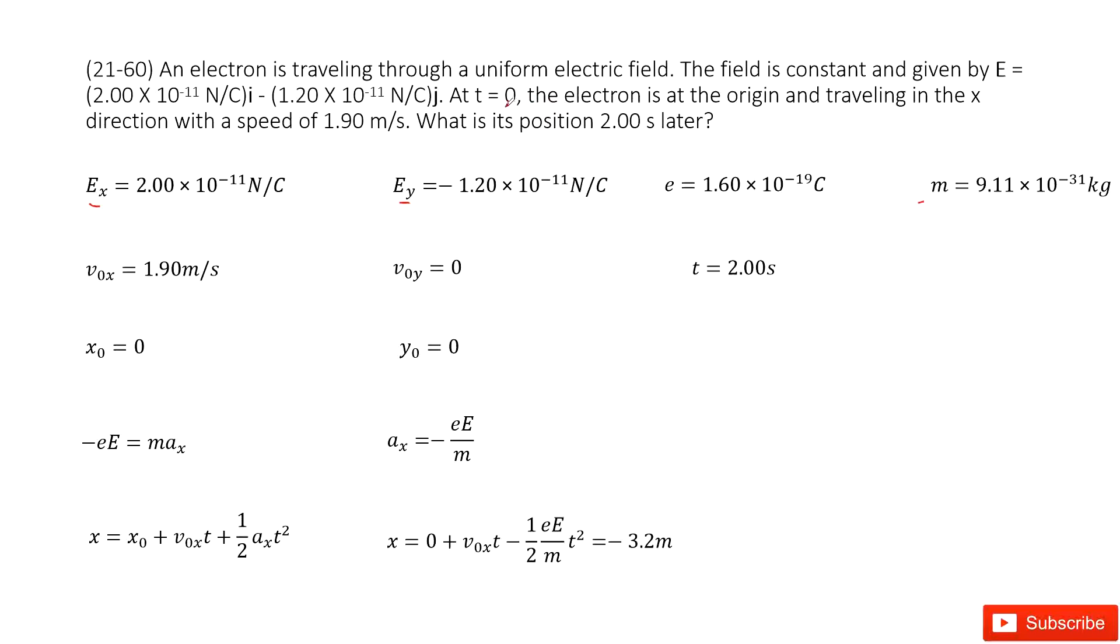At initial, t equals zero, the electron is at its origin, so the initial location is given. And it travels in the x direction, so that means v0x is 1.9 meters per second and v0y is zero.